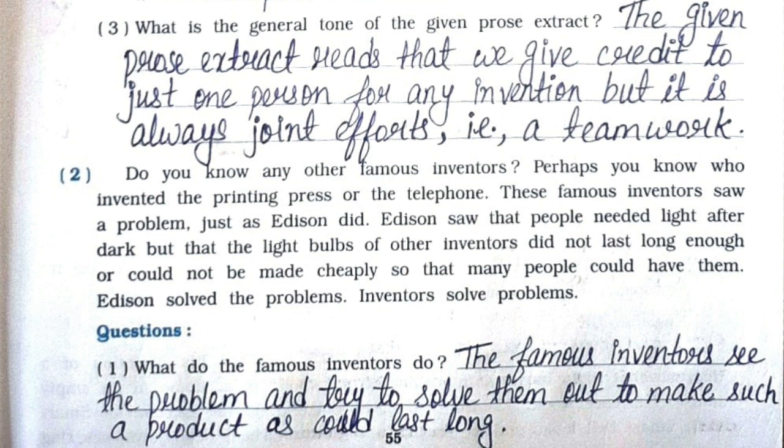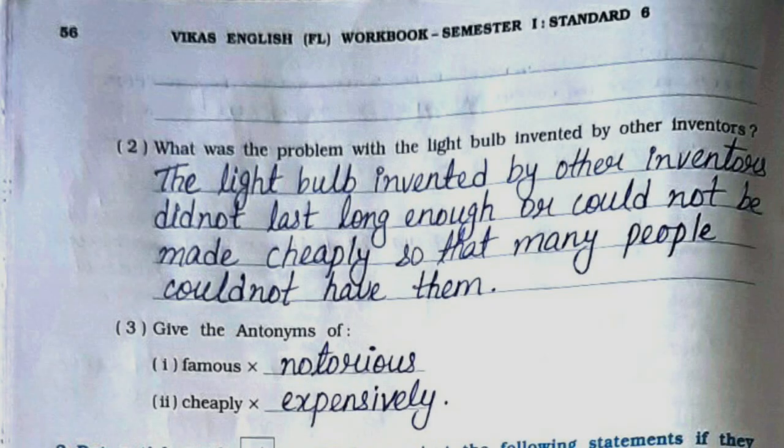Now, second paragraph question answers. First: what do the famous inventors do? The famous inventors see the problem and try to solve them out to make a product that could last long. Second: what was the problem with the light bulb invented by other inventors? The light bulb invented by other inventors did not last long enough, or could not be made cheaply, so that many people could not have them.